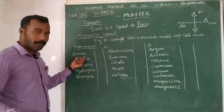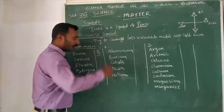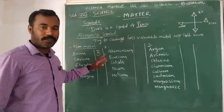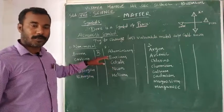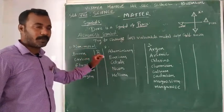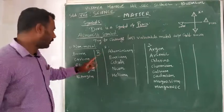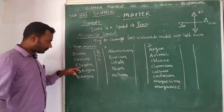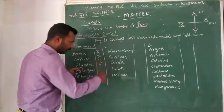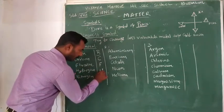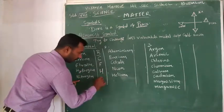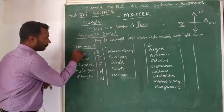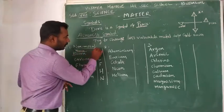Whenever one writes the element name, the first letter is always a capital letter. For example: boron — B, carbon — C, fluorine — F, hydrogen — H, nitrogen — N. This name is the element name; this name is the symbol.